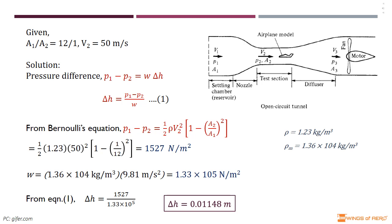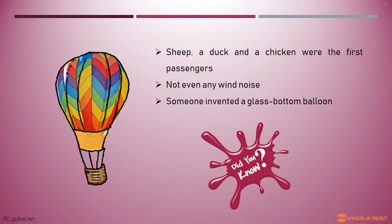Did you know? A sheep, a duck, and a chicken were the first passengers aboard a hot air balloon. They survived the very first hot air balloon flight which lasted about eight minutes. When the burner of a hot air balloon is turned on it can be quite noisy in the basket, but when the burner is turned off it is very quiet. There is not even any wind noise since the balloon is moving with the wind.